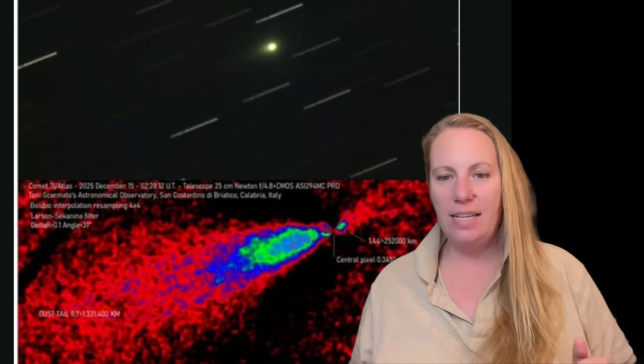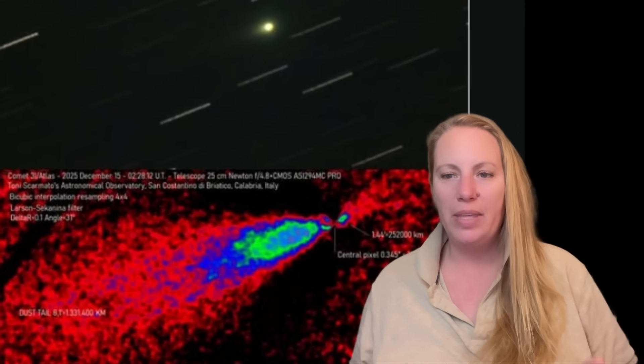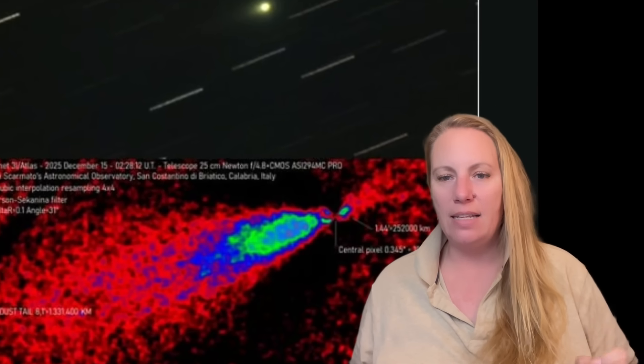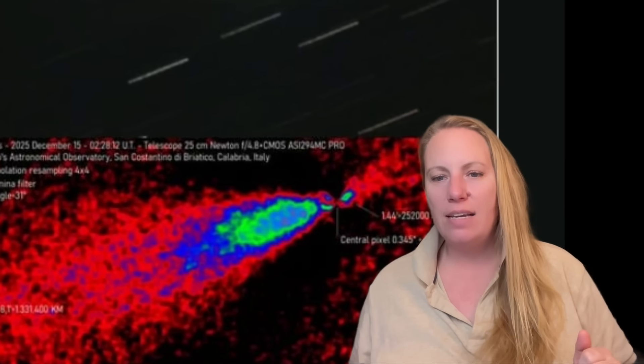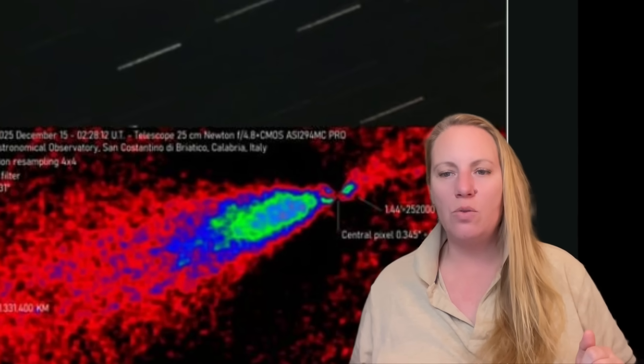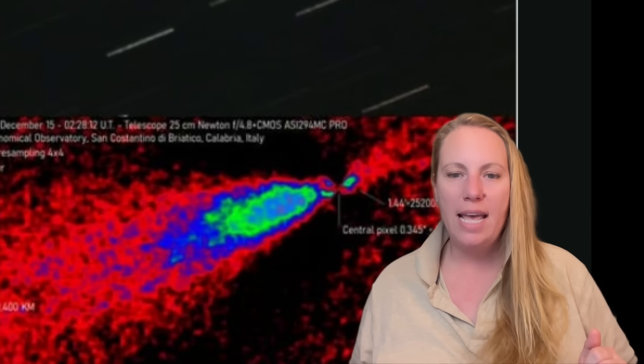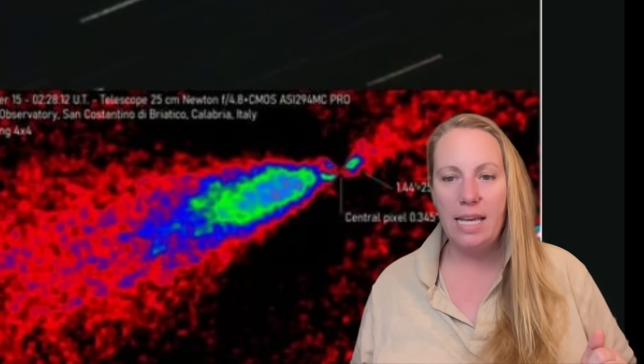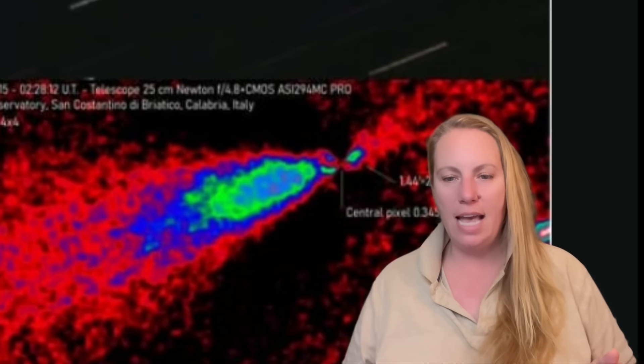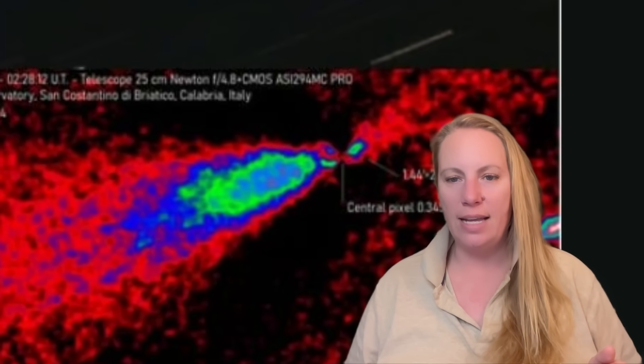It's a 60 by 60 second exposure, and it's the telescope Newton 25 centimeter, and it's from the Tony Scarmato's Astronomical Observatory in San Constantino di Briatico in Calabria in Italy. Italy has taken an image of 3i Atlas.